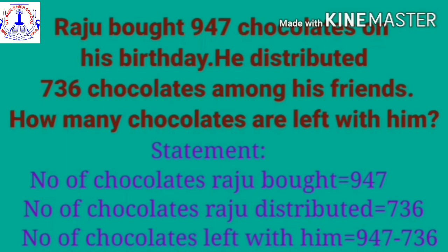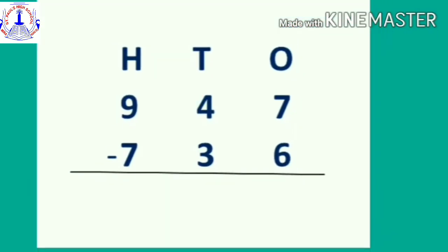He distributed 736 chocolates among his friends, so the second statement: number of chocolates Raju distributed — that is 736. Third and last statement: number of chocolates left with him. When you want to find out how many are left, you are going to subtract — so subtract 736 from 947.